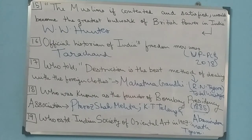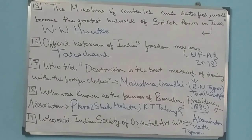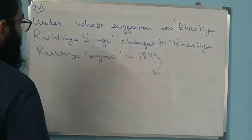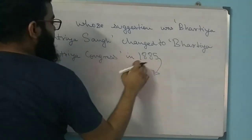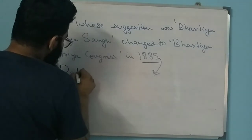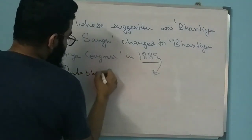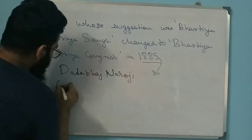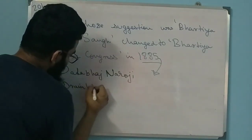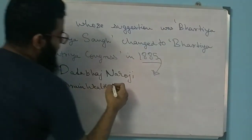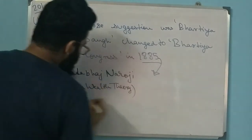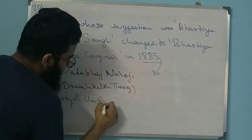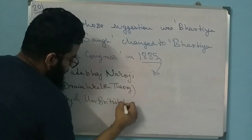Question 20: Under whose suggestion was 'Bharatiya Rashtriya Sangha' changed to 'Bharatiya Rashtriya Congress' in 1885? The answer is Dadabhai Naoroji. He is a quite important personality - he wrote a book on the Drain of Wealth theory under British rule.